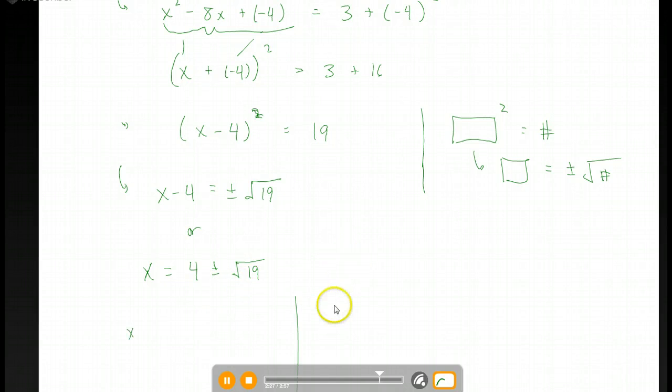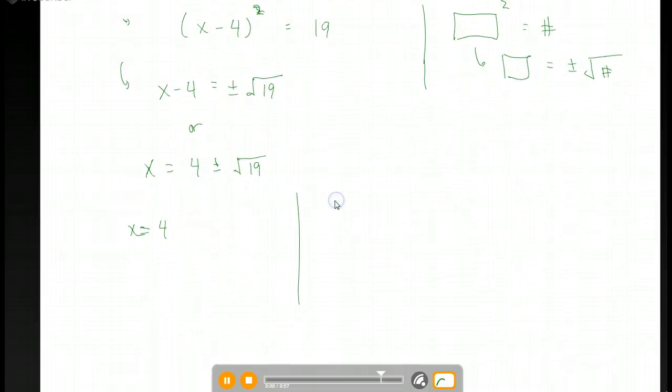Okay, now we can look at that as two separate solutions. So one of the solutions is 4 plus the square root of 19. The other one is 4 minus the square root of 19. If we want to approximate that, we can use a calculator to get it to, say, four decimal places. And the positive solution in this case, or the largest solution is 8.3589. And the other solution comes out negative. It's negative 0.3589.